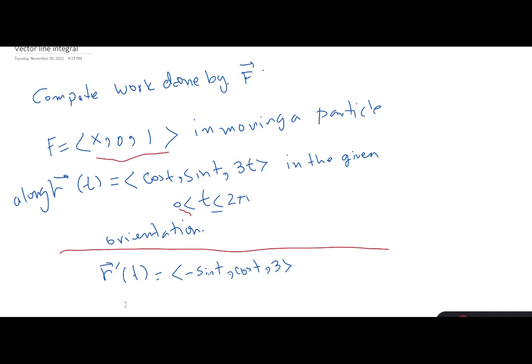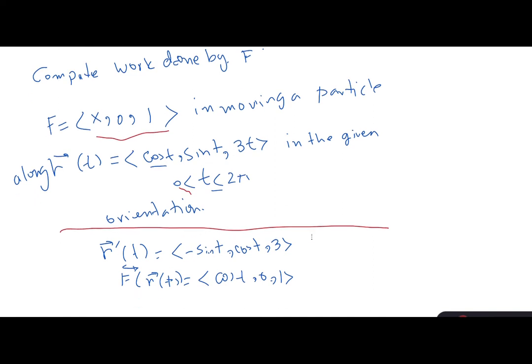The next step is to find F of R of T. That is, for X you plug in the X value of R(T), which is cosine T. So we get cosine T, then 0, then 1 - that's F of R of T.